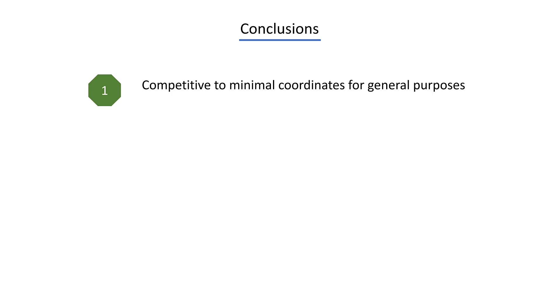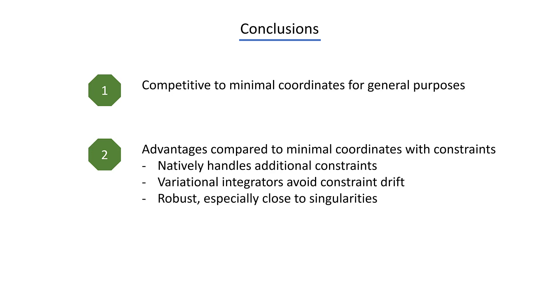In addition, maximal coordinates have some advantages over minimal coordinates, especially when dealing with constrained mechanical systems. Because they're built on treating constraints, adding additional constraints, for example for loop closures, can be easily done. Secondly, because of the variational formulation, we do not have constraint drift that you would normally get when numerically integrating constraints with standard minimal coordinate algorithms where you then need stabilization schemes. And thirdly, as you saw in the results, maximal coordinates seem to be more numerically robust than minimal coordinates, especially close to singular configurations.